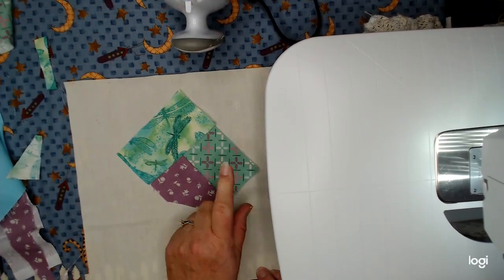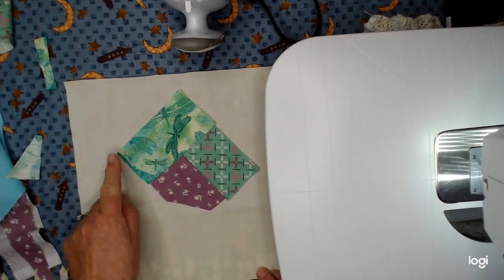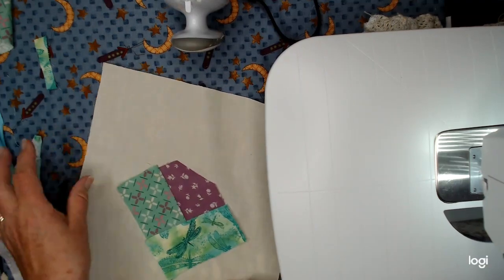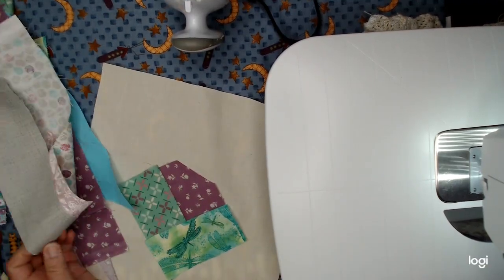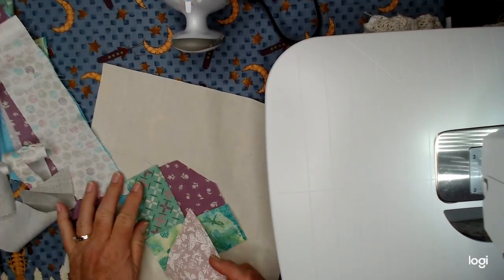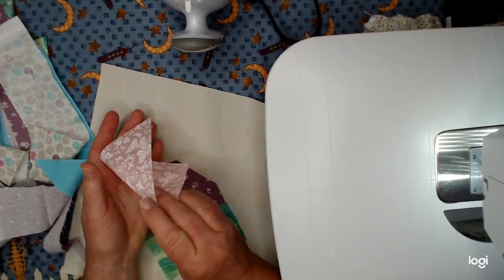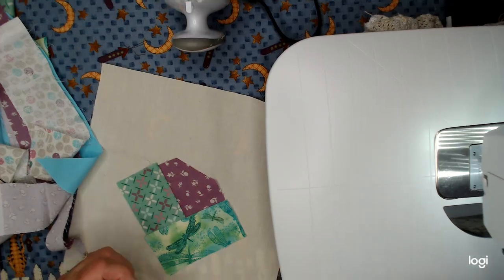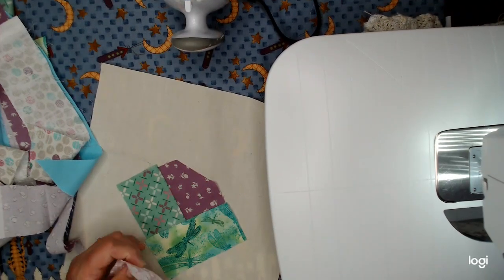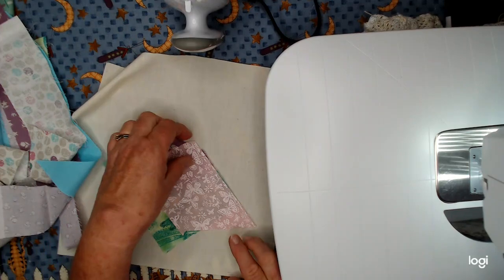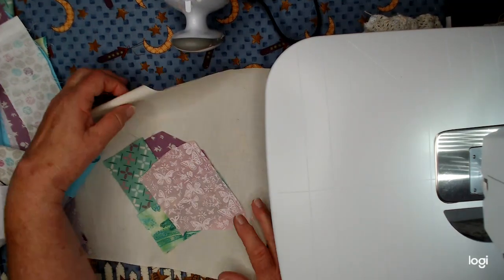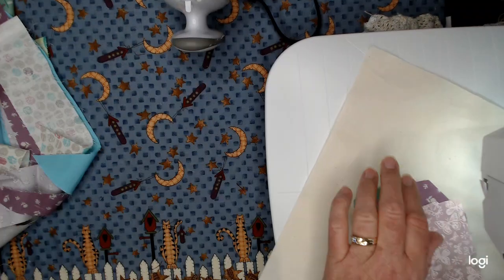So we started here, we did this one, we did this one. Now we're going to do this seam right here. So let's turn it around and let's pick. I think I'm going to go with this piece of pink, which I already know is too wide, but that's okay. I'm going to trim it down. So we're going to do this little seam right here. So I'm overlapping and I'm overlapping.